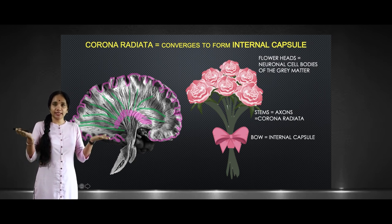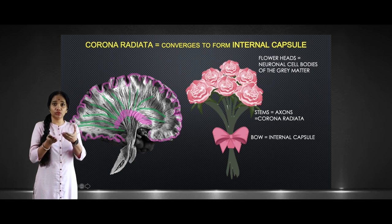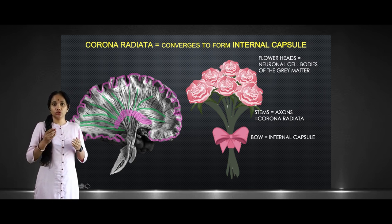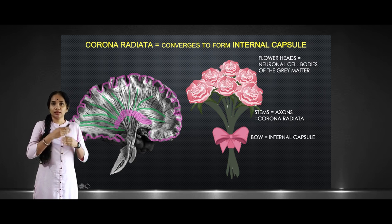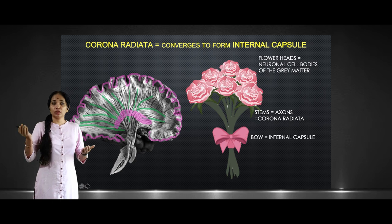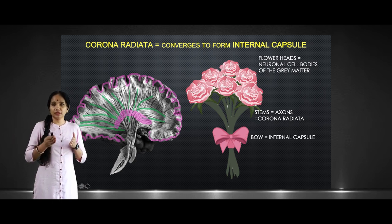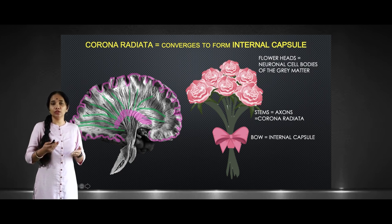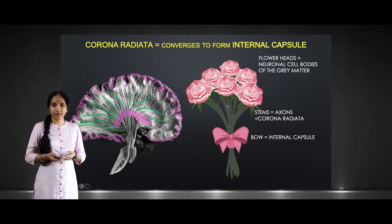All the stems — in other words, the corona radiata — come close together and converge at the internal capsule where they are tightly bound. The clinical implication is that fibers which are widely spread over the cerebral cortex all converge at the internal capsule, so per unit area there are more fibers in the internal capsule than in the corona radiata.